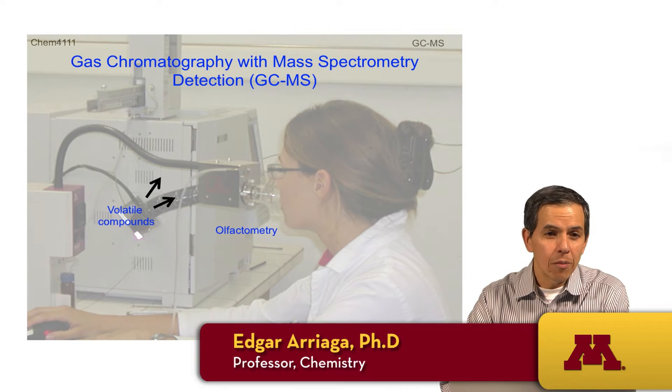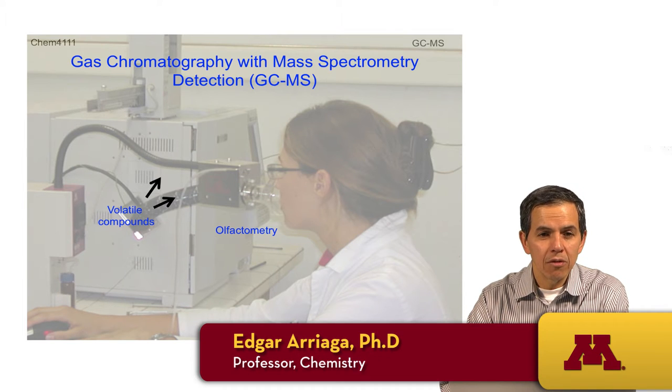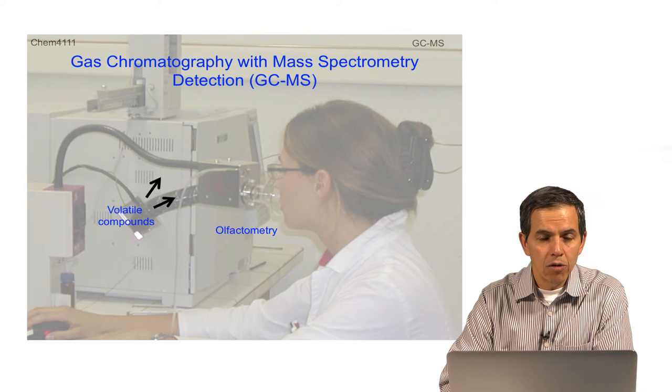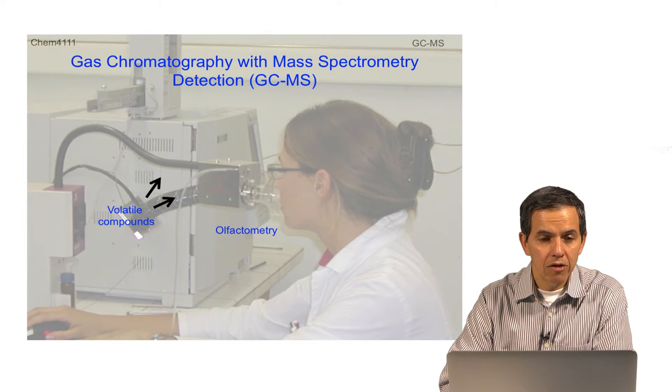This is an introduction to gas chromatography with mass spectrometry detection, or GC-MS. This technique is adequate for the separation of volatile components and then detection by mass spectrometry, which involves the detection not only of the molecular masses, but also the masses of the fragments.